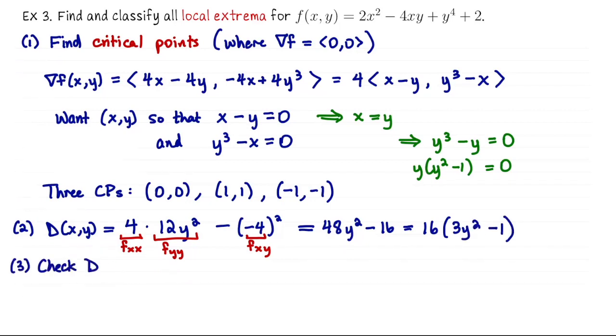So that's going to be 48y² minus 16, or we can write 16 times 3y² minus 1. That's the quantity D of x,y in general, but now we need to check that specifically at our critical points. Let's do D of (0,0) first. That would be 16 times 0 minus 1. So that's negative 16, which is less than zero. That tells me that at the origin, our function is a saddle. There's a way to go up and a way to go down from that point as we move away from the origin.